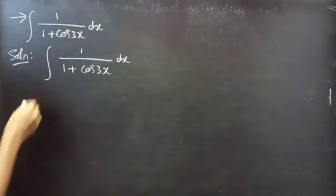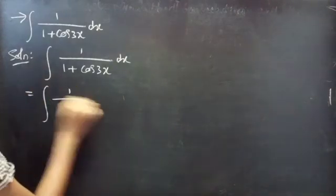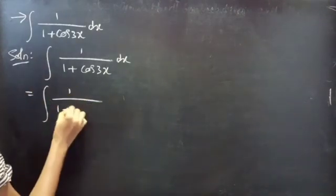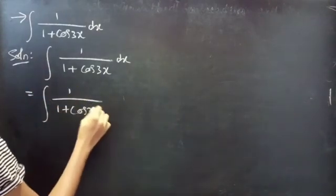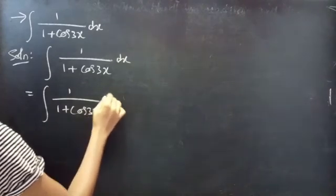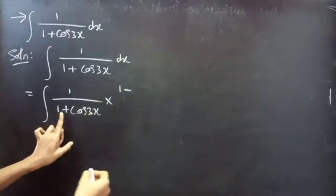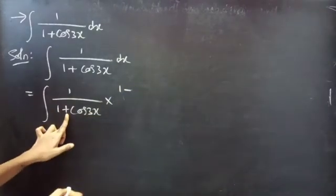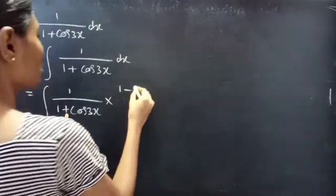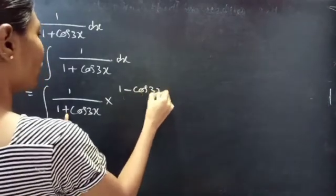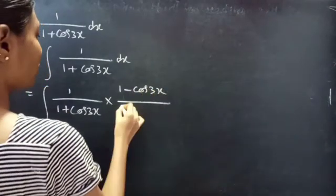Now we are going to rationalize the denominator. We will write this as 1 by (1 plus cos 3x). Since we are having plus in the denominator, we will use minus — we will multiply and divide by (1 minus cos 3x).